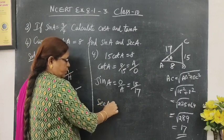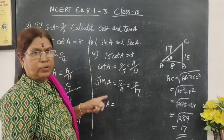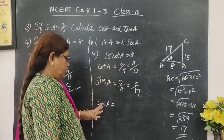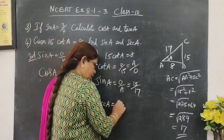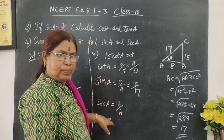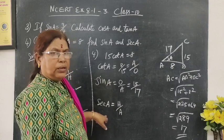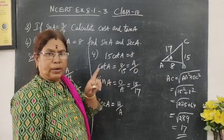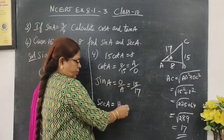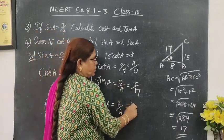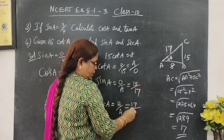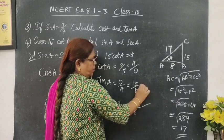Then secant A. Secant A is the reciprocal of cos A. Cos A, adjacent side by hypotenuse. Therefore, hypotenuse by adjacent side. Since this is the reciprocal of cos A. Cos A, we know adjacent by hypotenuse. Just to make it reciprocal. So hypotenuse by adjacent. What is hypotenuse? 17. Then adjacent side of the angle A: 8. So this is the answer for this.